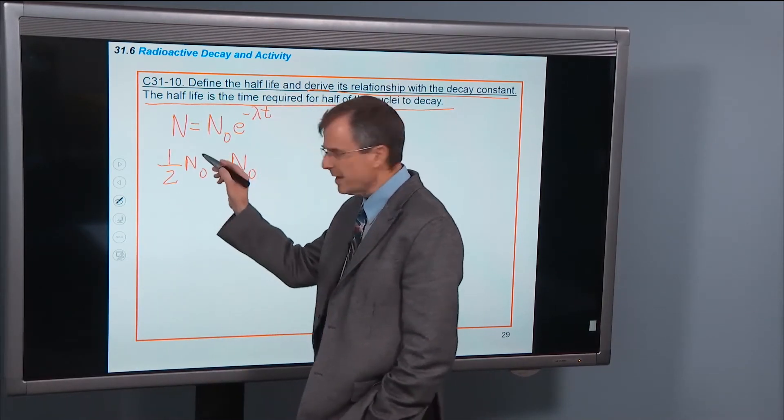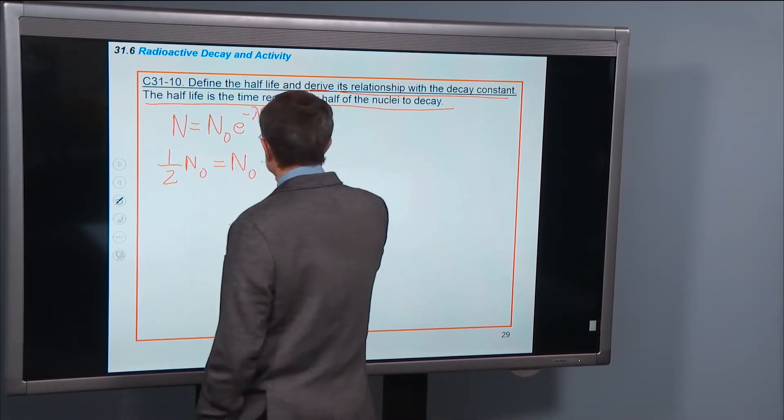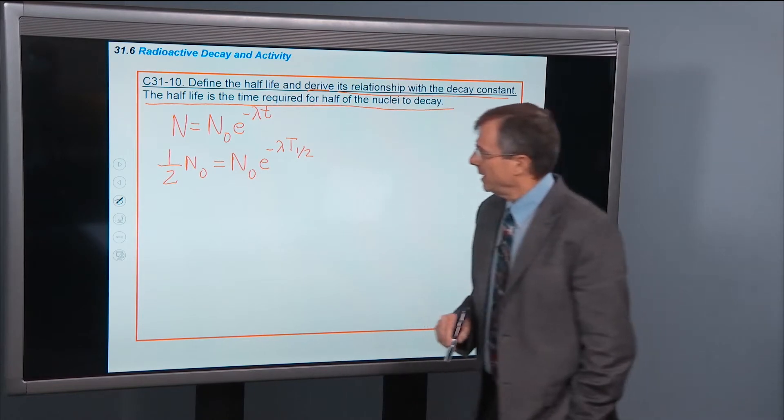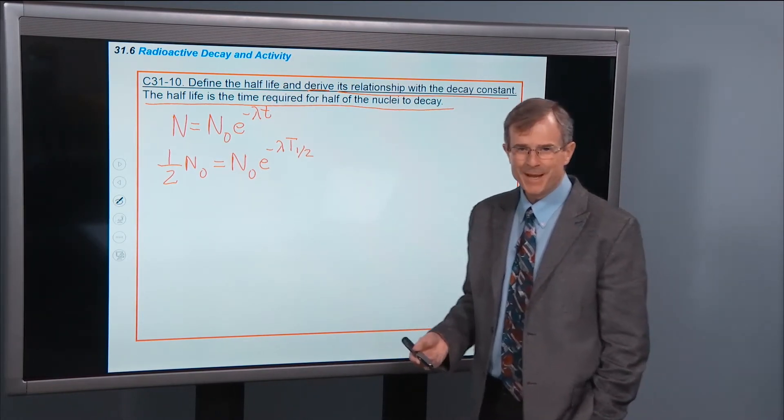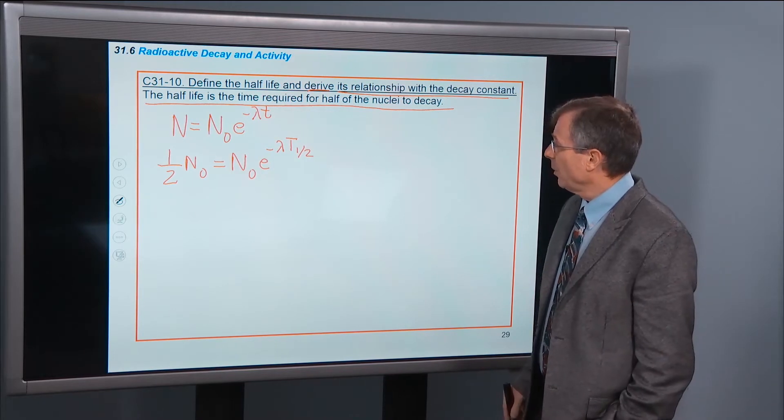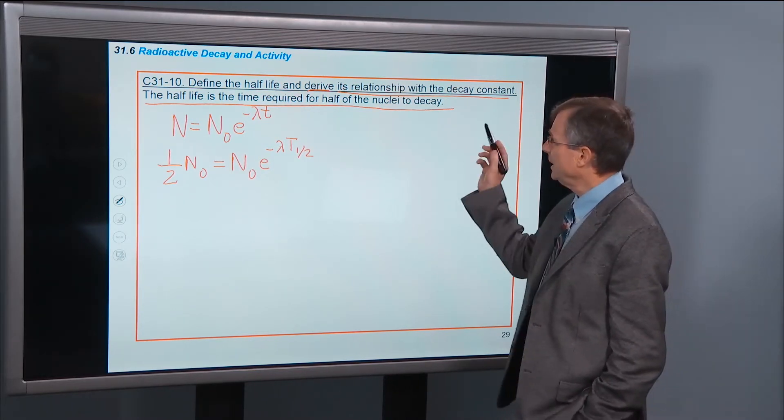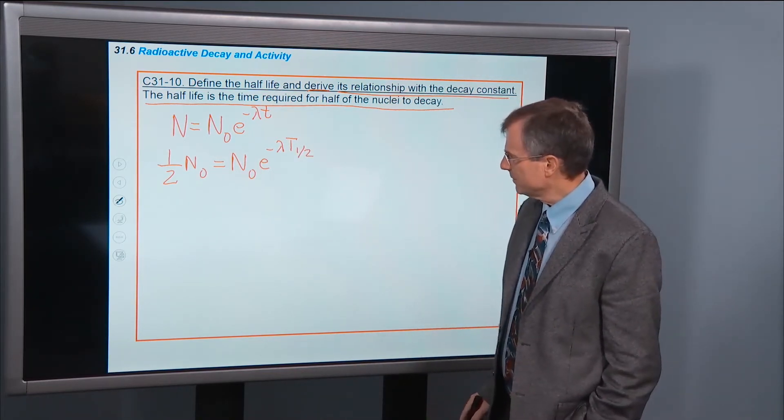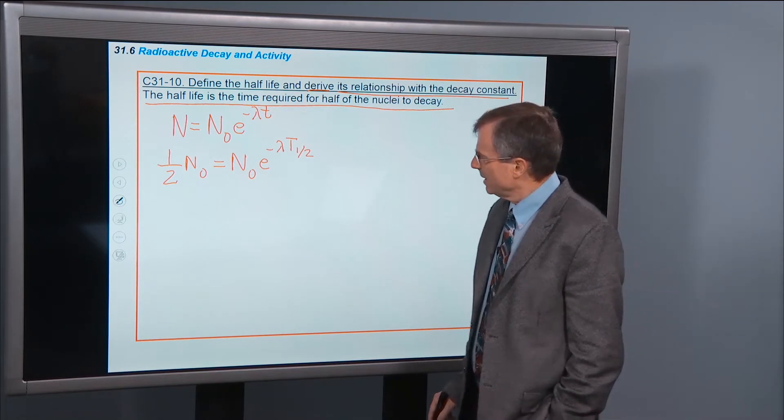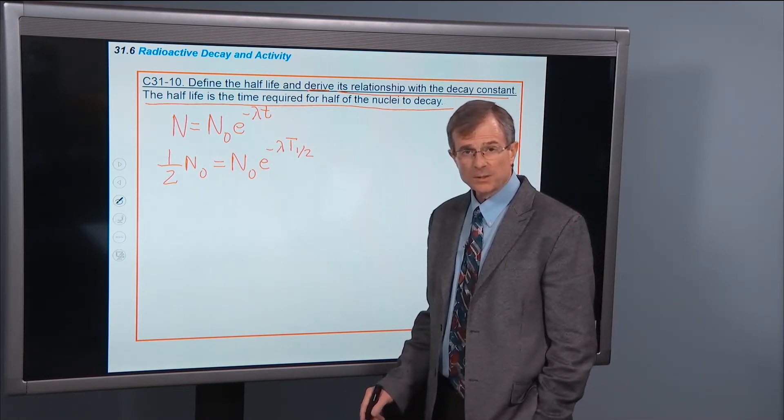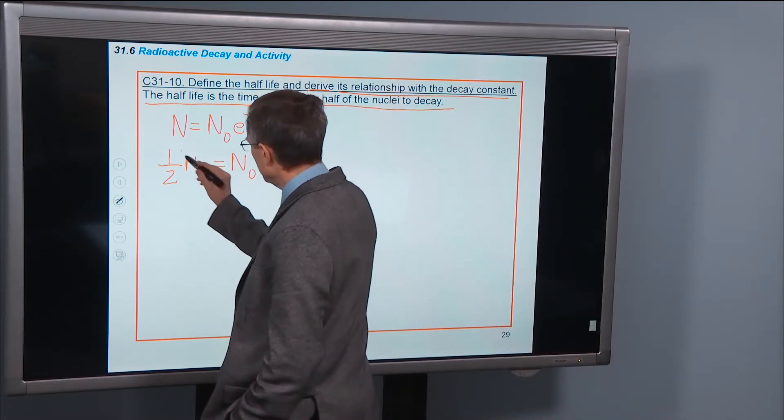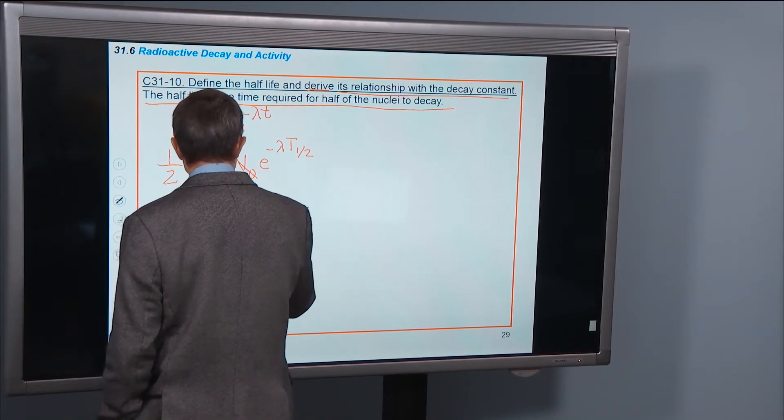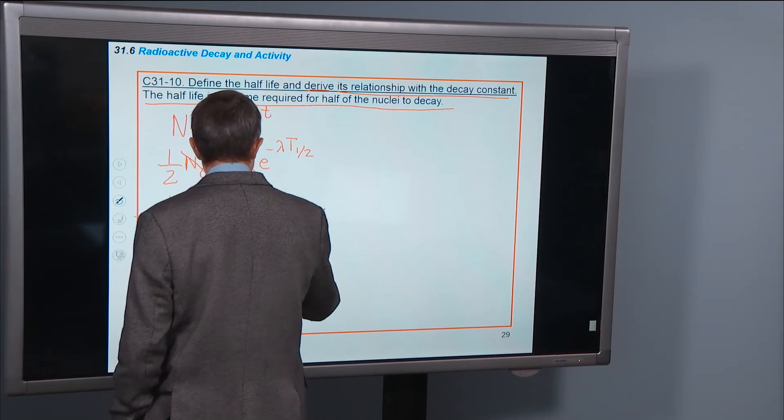So I've just put in 1 half of n0 for n. And I'm putting in the half-life, t 1 half, in for t. And now what we're trying to do is to find the relationship between the half-life, this t 1 half and lambda. So the rest of this is just math. And you can see that there's a glorious cancellation. You can divide both sides by n0. And that leaves us with 1 half equals e to the minus lambda t 1 half.